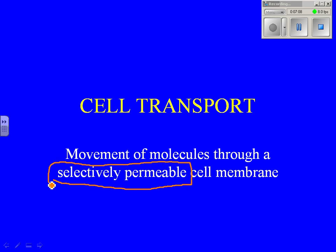We use the term cell transport: movement of molecules that go through a selectively permeable membrane. Selectively almost literally means that it chooses, and permeable means stuff can get in or stuff can go through it. So we're going to talk about how things get in and out of the cell membrane.